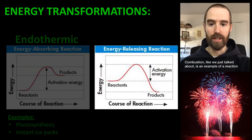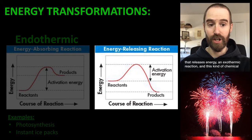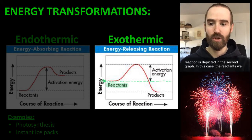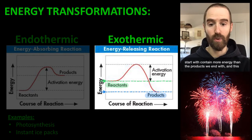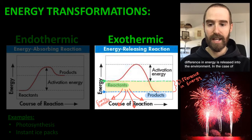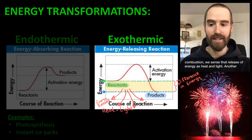Combustion, like we just talked about, is an example of a reaction that releases energy — an exothermic reaction — and this kind of chemical reaction is depicted in this second graph. In this case, the reactants we start with contain more energy than the products we end with, and this difference in energy is released into the environment. In the case of combustion, we sense that release of energy as heat and light.